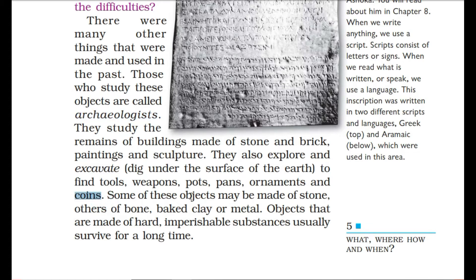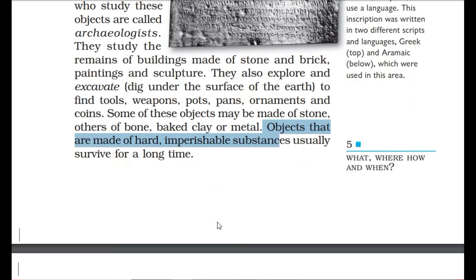These things are related to the past, and through them archaeologists get to know the lifestyle of people in the past. Some of these objects may be made of stone, others of bone, baked clay or metal. Objects that are made of hard, imperishable substances usually survive for a long time — that is the advantage of writing or making things on hard surfaces.